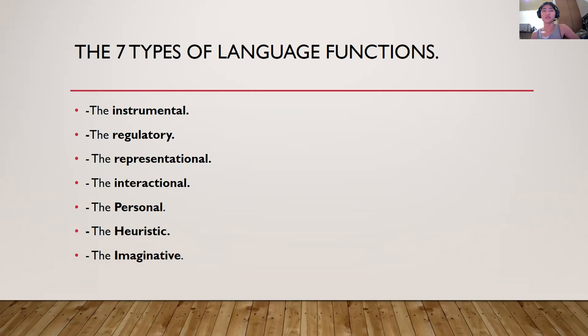The second is the regulatory function, which is the control of events. Such control is sometimes difficult to distinguish from the instrumental function. Regulatory functions are not so much the unleashing of certain power as the maintenance of control. The third is the representational function — the use of language to make statements, convey facts and knowledge, explain or report, that is, to represent reality as one sees it. For example: 'the sun is hot,' 'the president gave a speech last night,' or even 'the world is flat' all serve representational functions, although the last may be highly disputed.